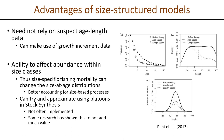There are a few key advantages of size-structured models over age-structured models, particularly when you don't have age composition data. First, you need not rely on suspect age-length data. Second, you can make direct use of growth increment data from tagging by integrating it within the assessment. However, the main advantage is the ability to directly affect the abundance within size classes. In an age-structured model with size-based selectivity, you're still only removing fish as a proportion within an age class — the modeled size-at-age distributions don't change.